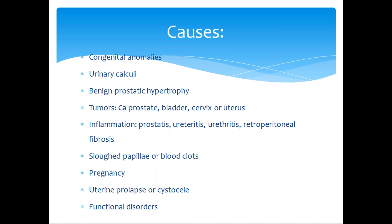Within the renal side, the obstruction can be at the pelvi-ureteric junction, or the ureters, or the bladder, or the urethra. Depending upon the site, initially either the ureter or the bladder or the calyces will be dilated.